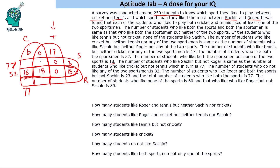The number of students who do not like any of the two sportsmen is 32. These are people outside both sportsmen circles. This gives us the value of b as 15, so we put b equals 15 in the diagram.